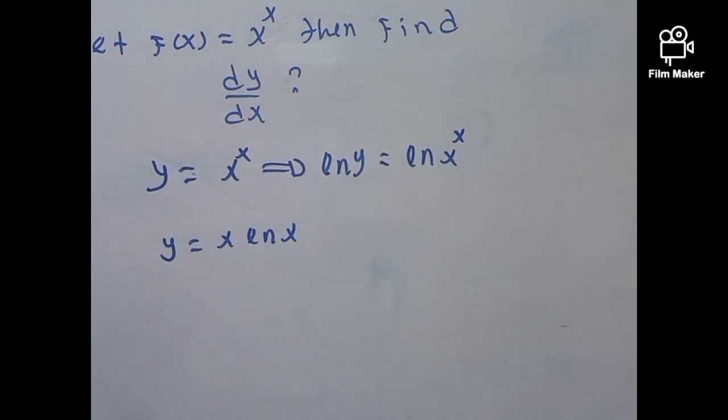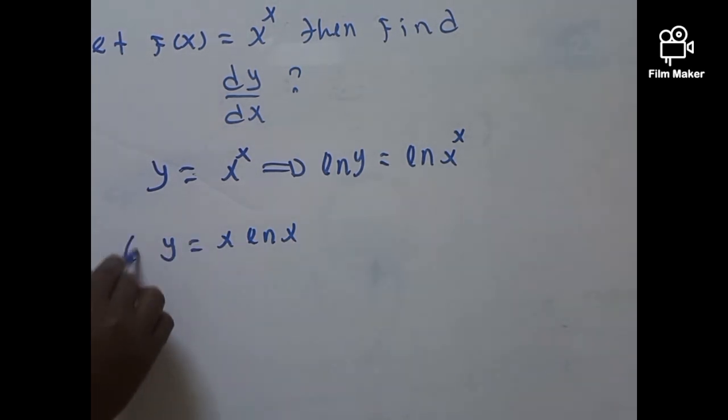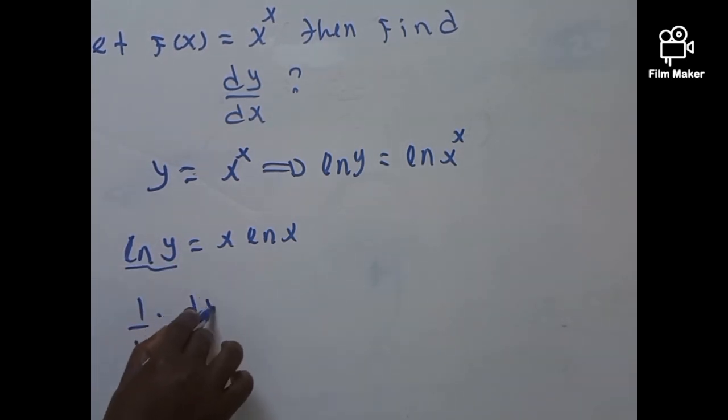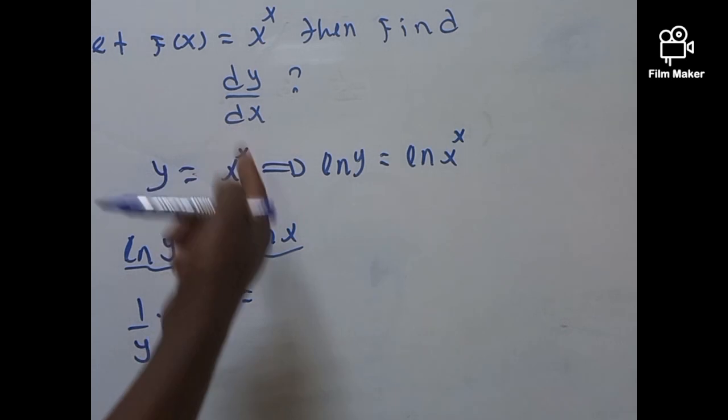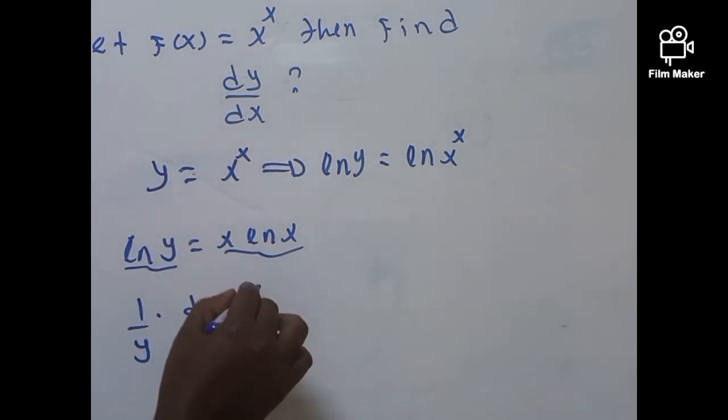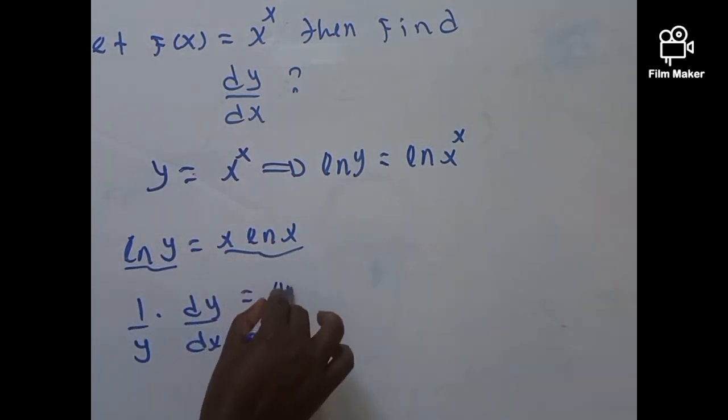And it takes the derivative of both sides and it is perfectly given by the derivative of this which is with respect to X is going to be 1 over Y times, that is dy by dX. And the derivative of this will be, you have to apply the product rule, the derivative of the first times the second, that the derivative of X is 1, so it is going to be ln of X plus.